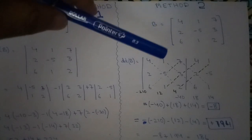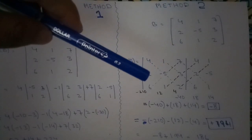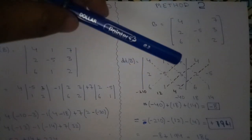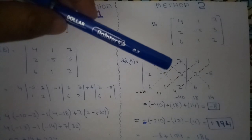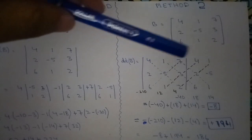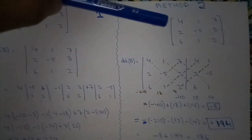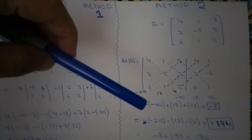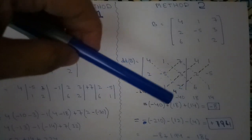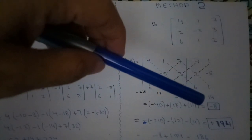And similarly we will take the diagonals in the opposite direction. That is 7 multiply minus 5 multiply by 6, that will be minus 210. 4 multiply by 3 multiply by 1, that will be 12. And similarly, 1 multiply by 2 multiply by 2, it will be 4.